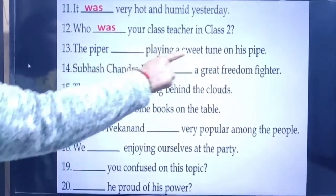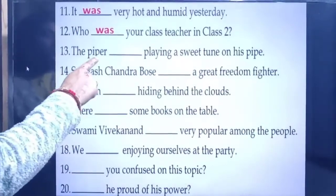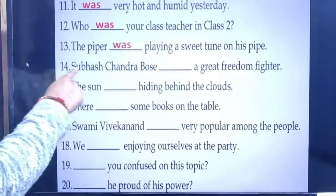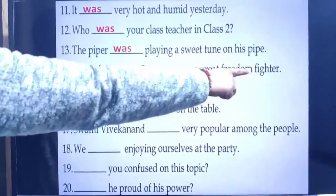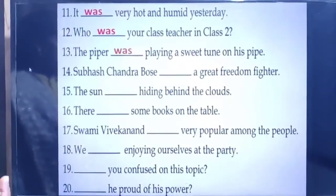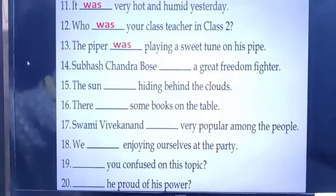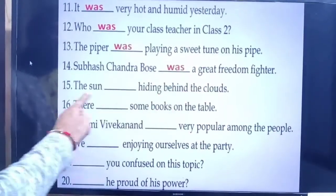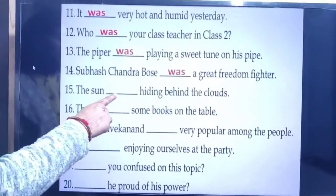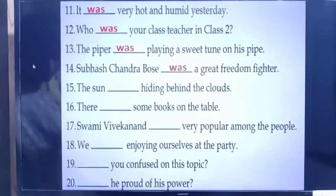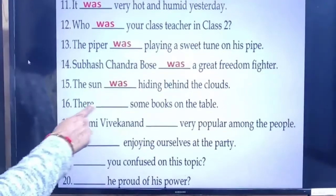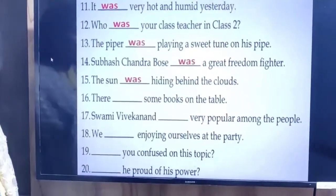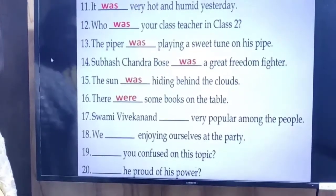Next: 'The piper ___ playing a sweet tune on his pipe.' The piper is singular, so: the piper was playing a sweet tune on his pipe. Next: 'Subhash Chandra Bose ___ a great freedom fighter.' Singular subject, so: Subhash Chandra Bose was a great freedom fighter. Next: 'The sun ___ hiding behind the clouds.' Only one sun — singular — so: the sun was hiding behind the clouds. Next: 'There ___ some books on the table.' Books is plural, so: there were some books on the table.